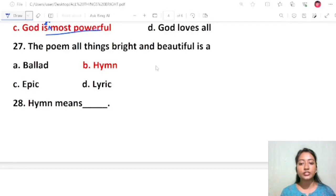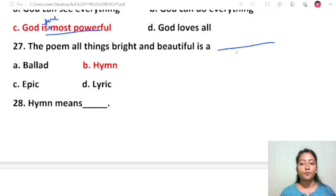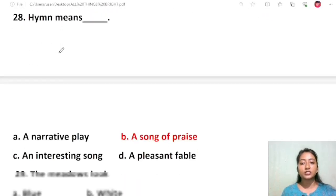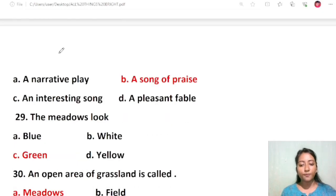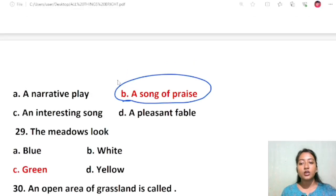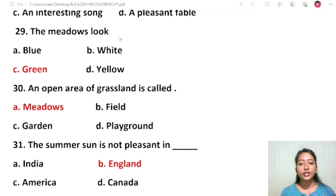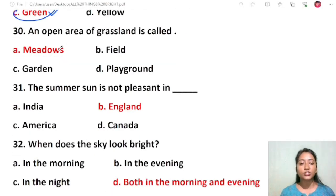Question 25: The poem All Things Bright and Beautiful is a hymn. Question 26: Hymn means a song of praise. Question 27: The meadows look green. Question 28: An open area of grassland is called meadows. This is already in your notes and glossary.